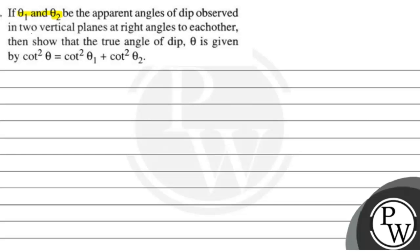The question is: if theta 1 and theta 2 be the apparent angles of dip observed in two vertical planes at right angles to each other, then show that the true angle of dip theta is given by cot² θ = cot² θ₁ + cot² θ₂.